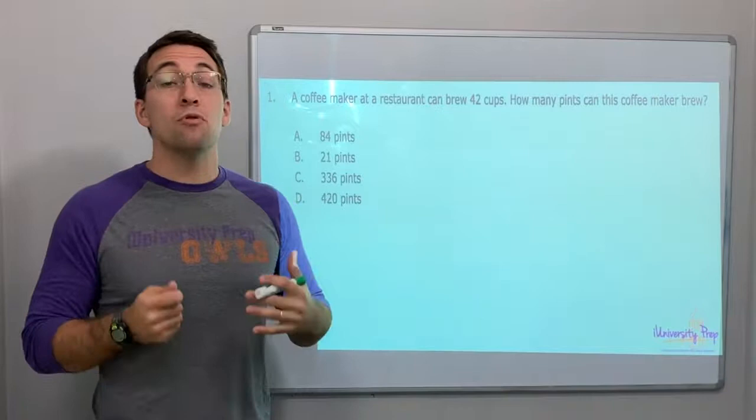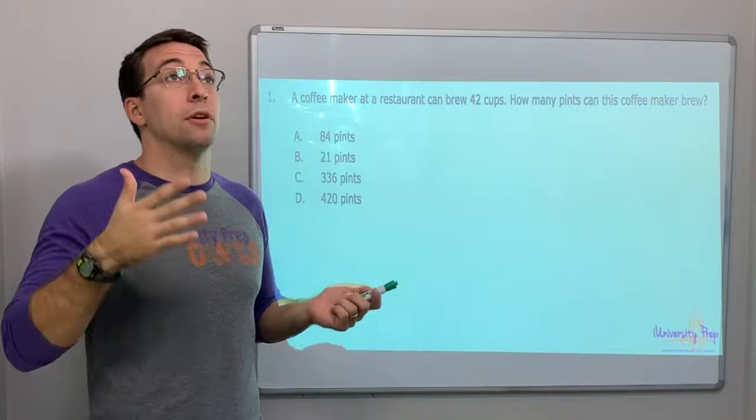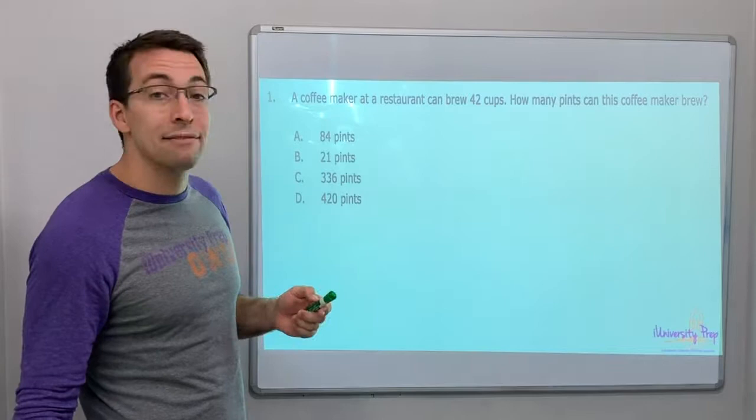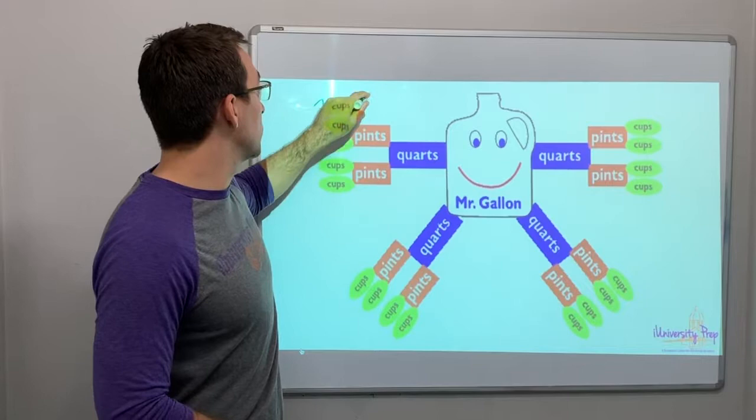A coffee maker at a restaurant can brew 42 cups. How many pints of coffee can this maker brew? Well, now we have to know how many cups are in one pint, right? We got to have it memorized. Let me show you guys. Here's gallon man. Bingo. Pint is two cups. Two cups equals one pint.